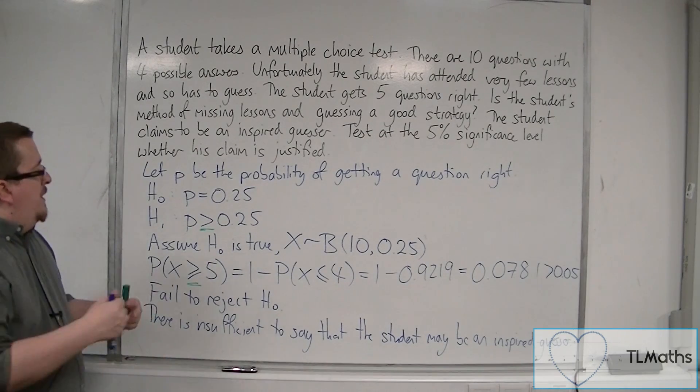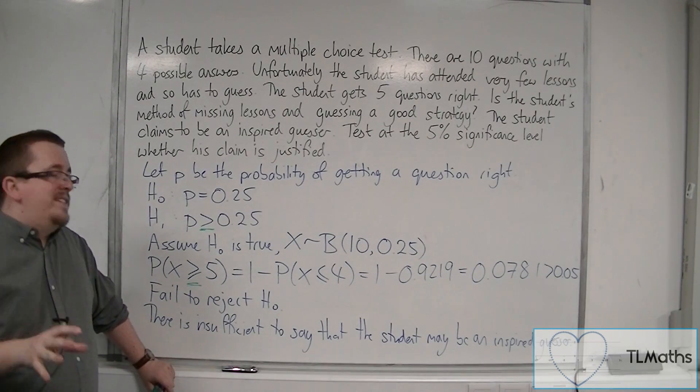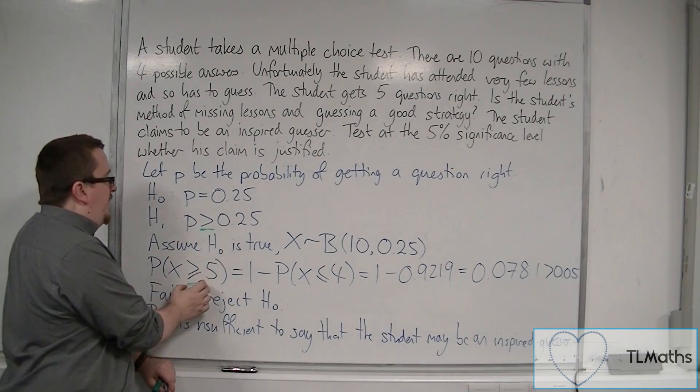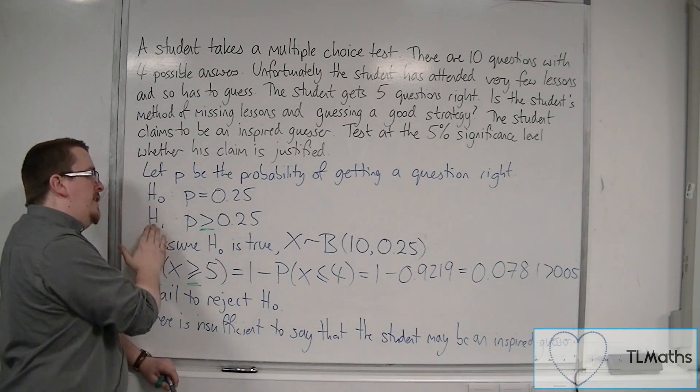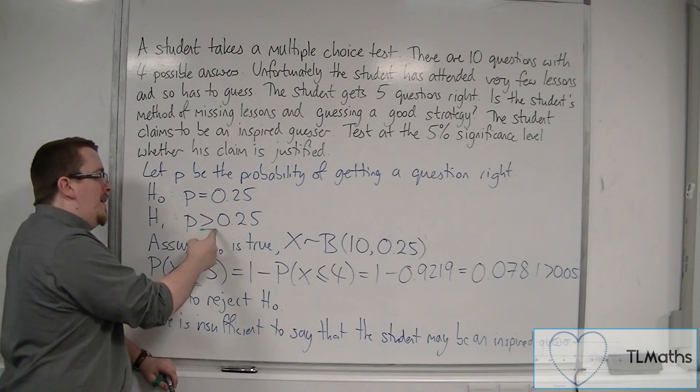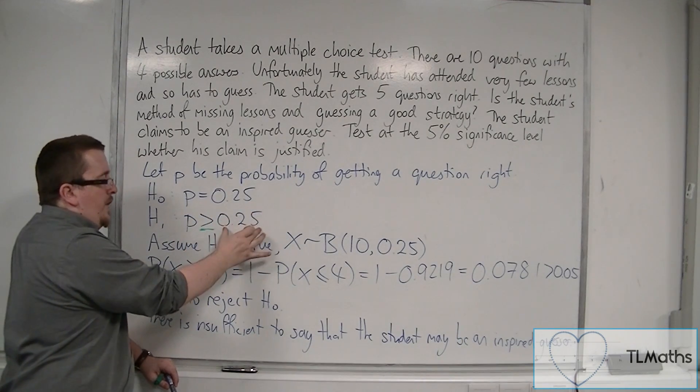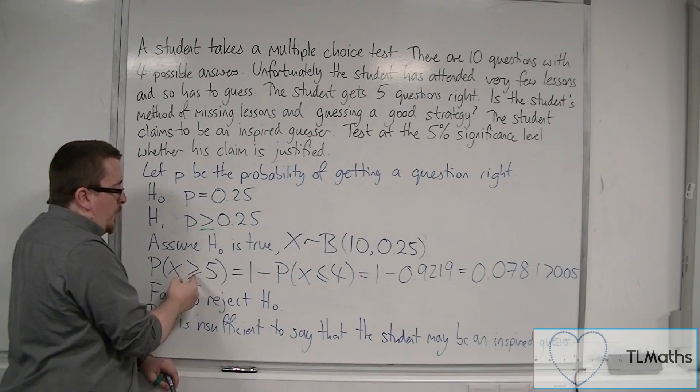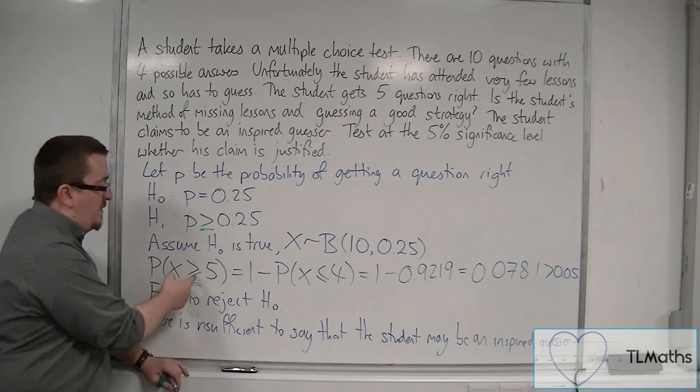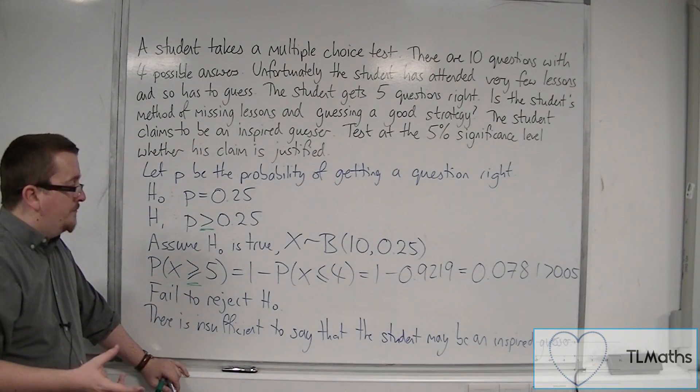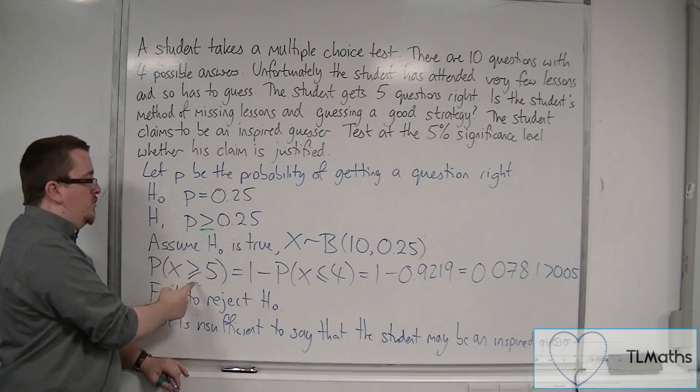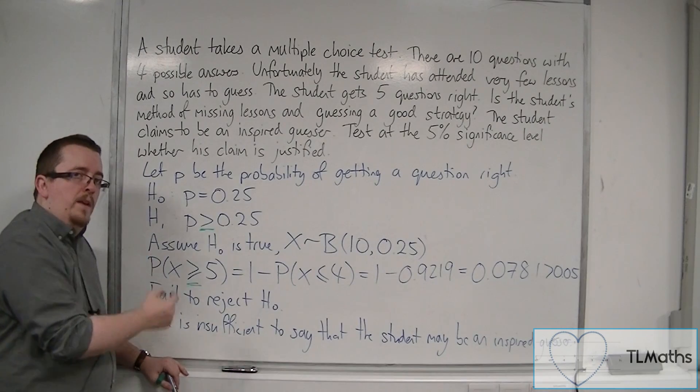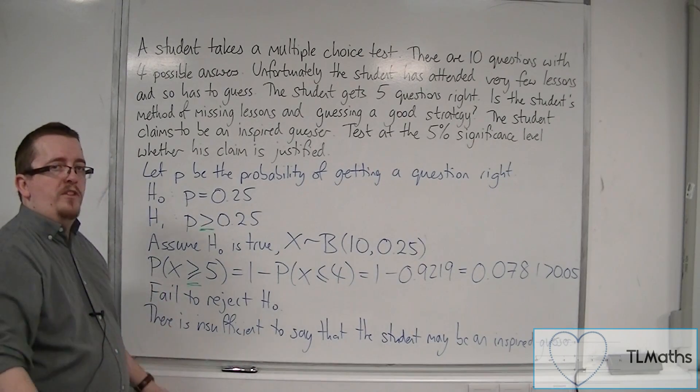So there are some key bits to pick up in this example. It's really this inequality situation, making sure you know that if you've got an alternative hypothesis with P greater than 0.25 in this case, then this is also a greater than symbol, greater than or equal to symbol. So if it's less than, less than or equal to. If it's greater than, greater than or equal to. Keep that in mind when you work through these problems.